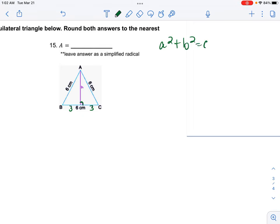So I'm gonna plug in what I know. My a squared is 3 squared plus b squared equals 6 squared. So I have 9 plus b squared equals 36. Subtract my 9, I get b squared equals 25.